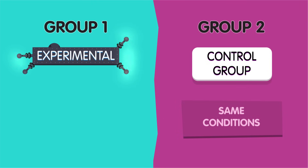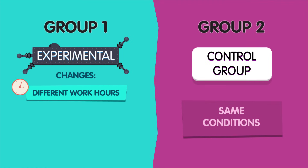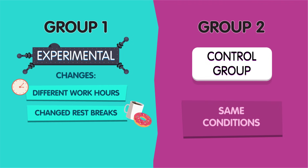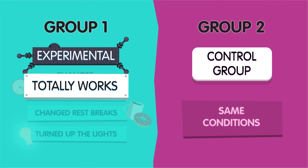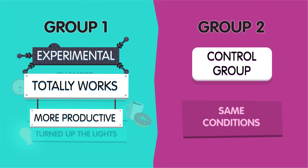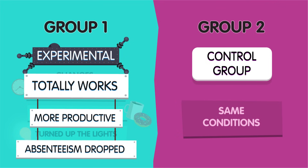For the experimental group, Mayo made a series of changes to their working environment: he gave them different work hours, changed up their rest breaks, and even turned up the lights on the factory floor. And, lo and behold, the changes seemed to work — the workers in the experimental group became more productive, and absenteeism dropped.